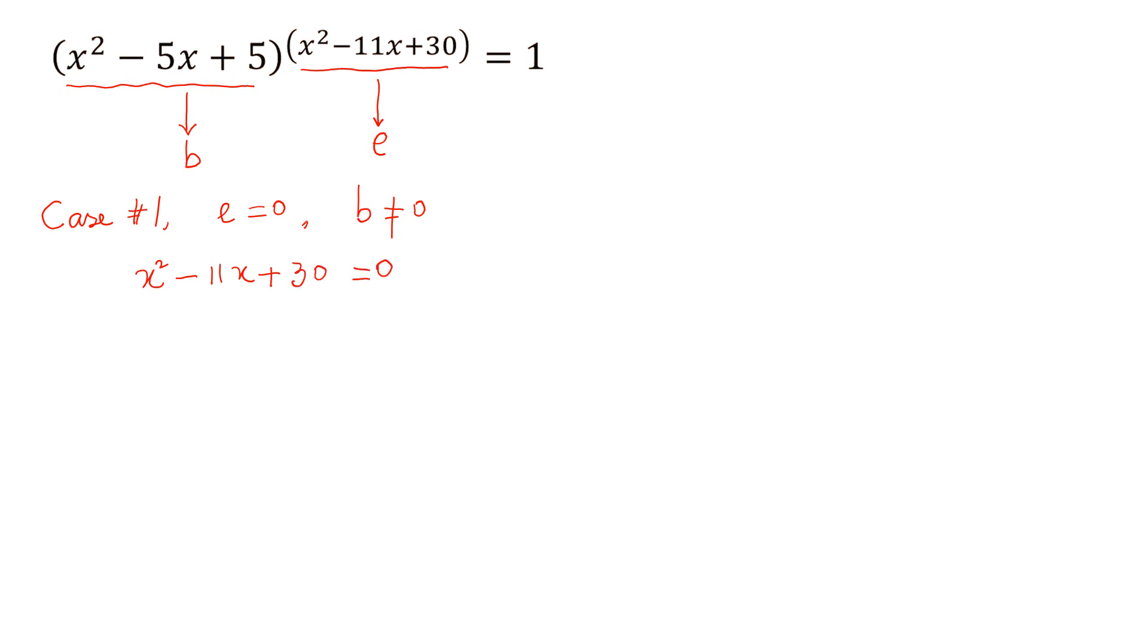Now if we factorize this, we can write (x - 5)(x - 6) = 0 and from here we get x = 5 and x = 6.